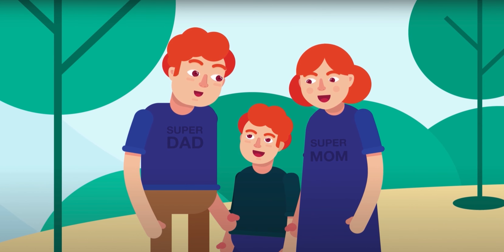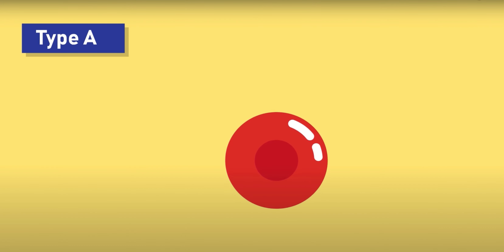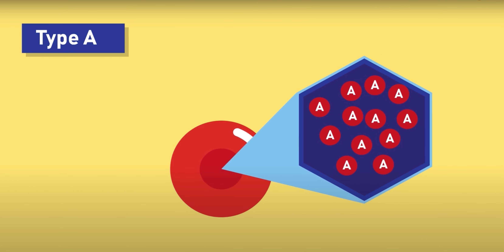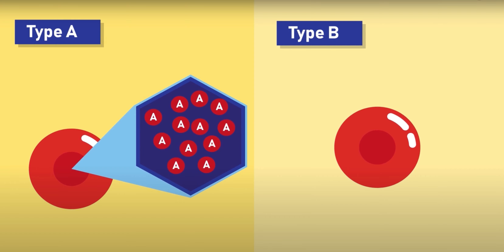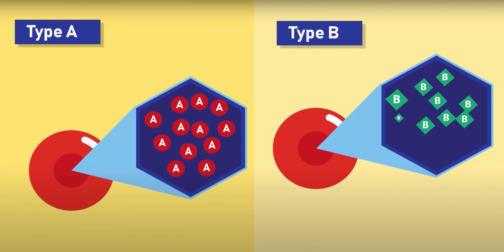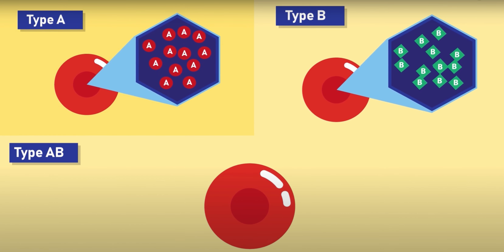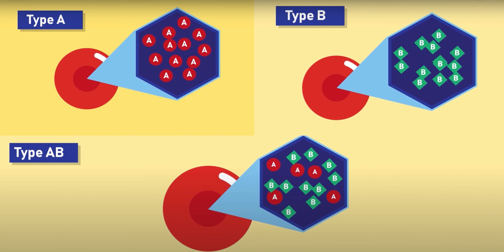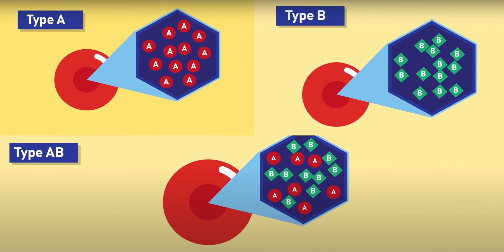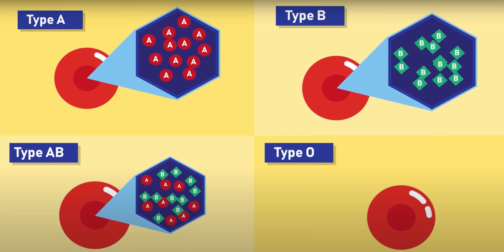Blood group A carries the aglatinogen A on the red blood cells. Blood group B carries the aglatinogen B on the red blood cells. Blood group AB carries the aglatinogens A and B at the same time on the red blood cells. While blood group O carries neither aglatinogen A nor aglatinogen B on the red blood cells.